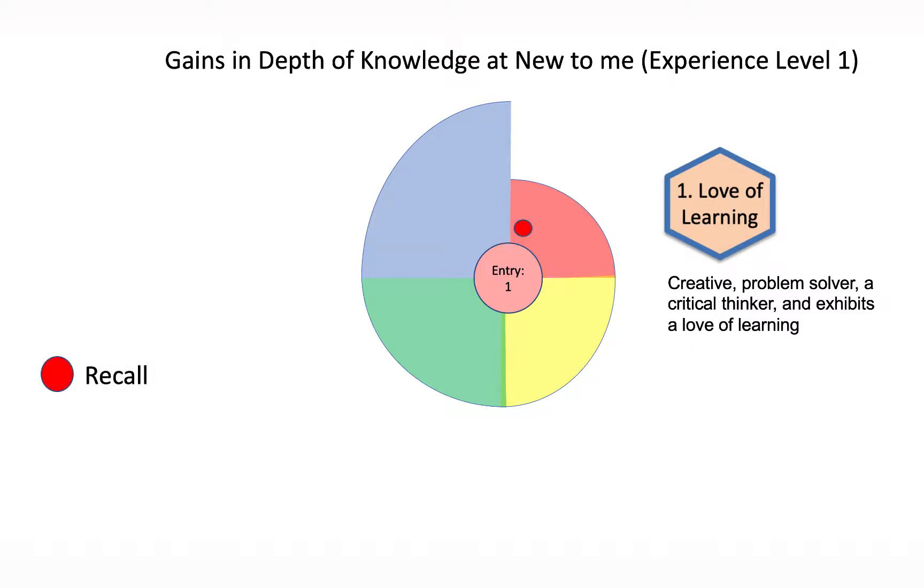The recall level is where you're just defining and identifying. Skills and concepts is where you can use these skills. Strategic thinking is where you're using it to solve simple problems that have known answers. And extended thinking is where you're doing it over time, planning and adjusting your plans and working across different competencies or domains.